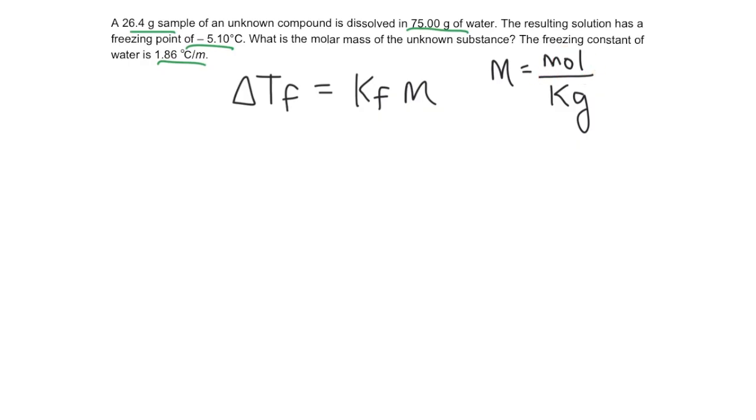The reason I want the moles of the unknown substance is because molar mass is in units of grams per mole. Since I already know the grams, once I have the moles, I can take the grams and divide it by the moles. Let's rearrange this equation. To solve for molality, I'm going to divide both sides by this constant and I'll end up with molality equals the change in freezing point divided by the freezing constant for water.